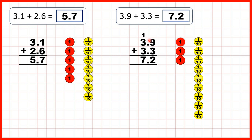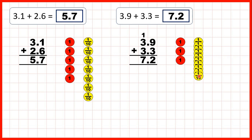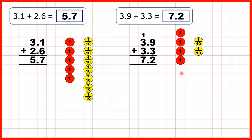For the next question we started with 3.9, so 3 wholes and 9 tenths, and in this question we had to exchange. We're adding 3 tenths, but if we add 1 tenth we then have 10 tenths, which we can exchange for 1 whole. So we added 1, 2, 3 tenths, and that gives us 2 tenths in our answer line. Then we added 3 ones — 1, 2, 3 — and you can see that we now have 7 ones altogether.